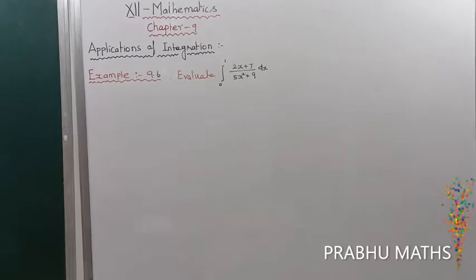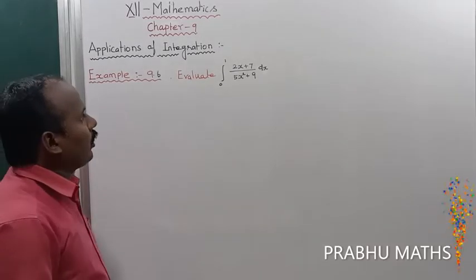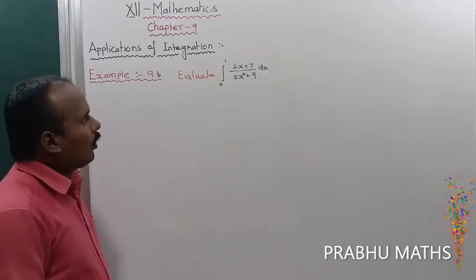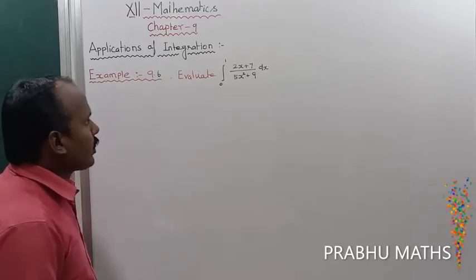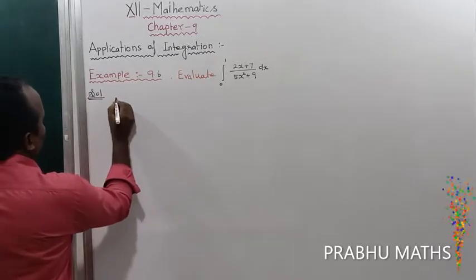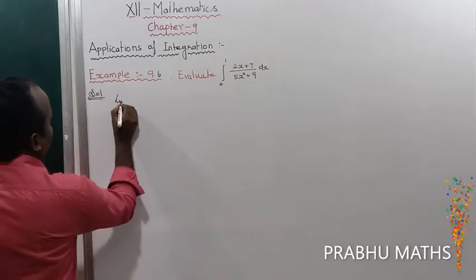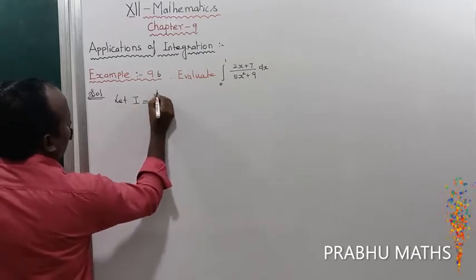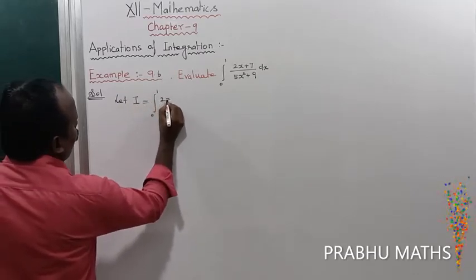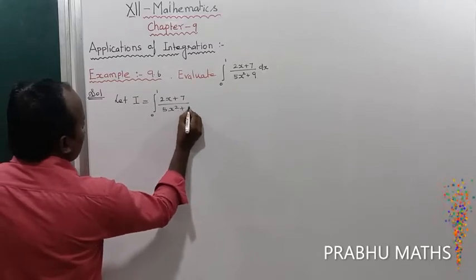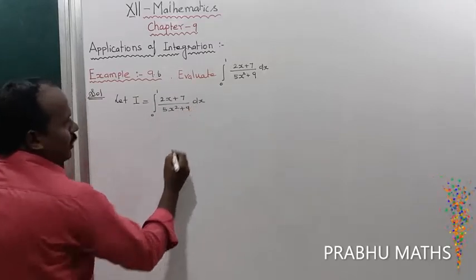Example 9.6: Evaluate the integral from 0 to 1 of (2x + 7) divided by (5x² + 9) dx. So first of all, the given integral is I = ∫₀¹ (2x + 7) / (5x² + 9) dx.